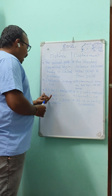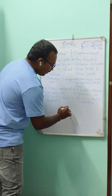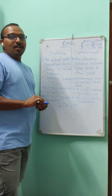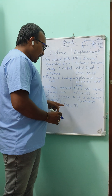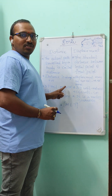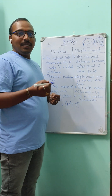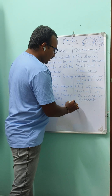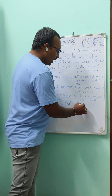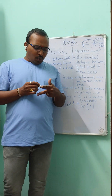The SI unit of distance is meter, and the same unit applies for displacement. The CGS unit is centimeter. The dimensional formula is the same for both. Using the fundamental quantities M, L, T — there is no mass (M⁰), length is present with power one (L¹), and no time (T⁰) — so the dimensional formula is simply L.